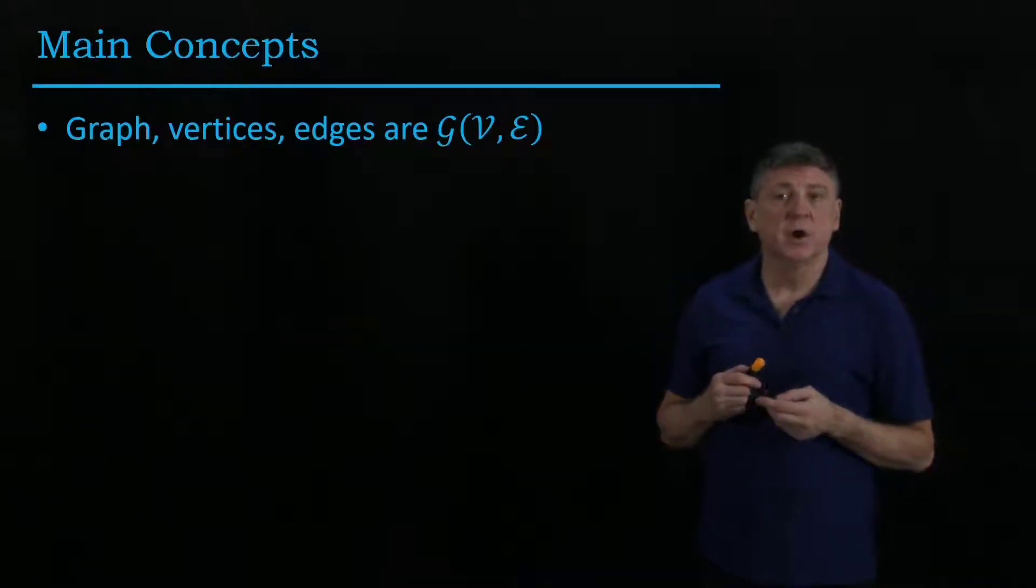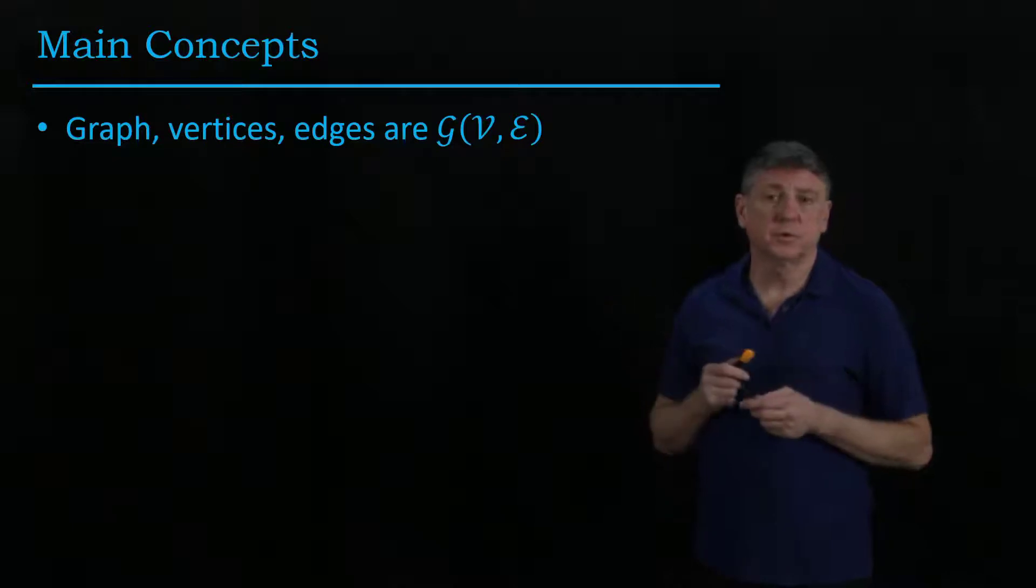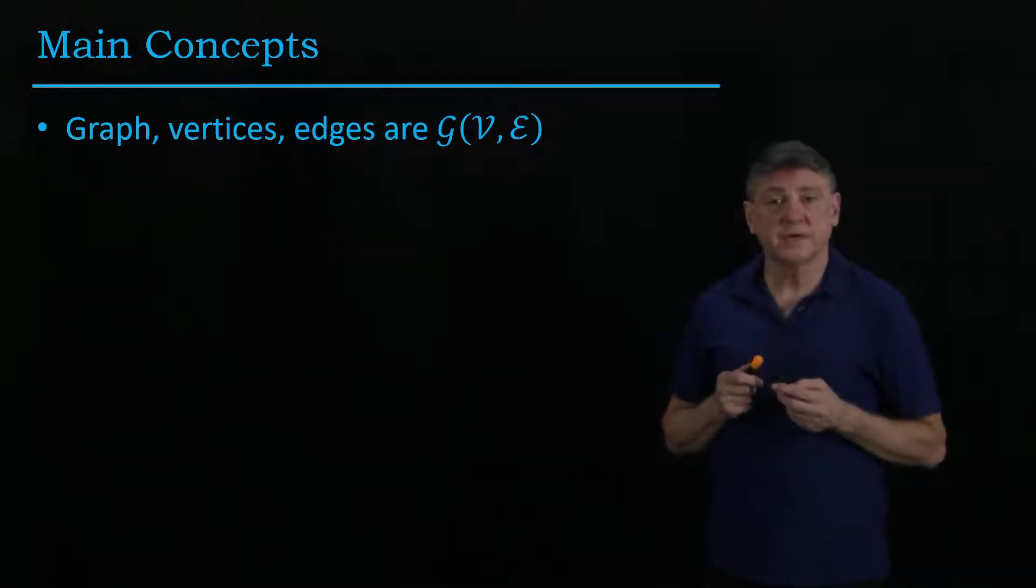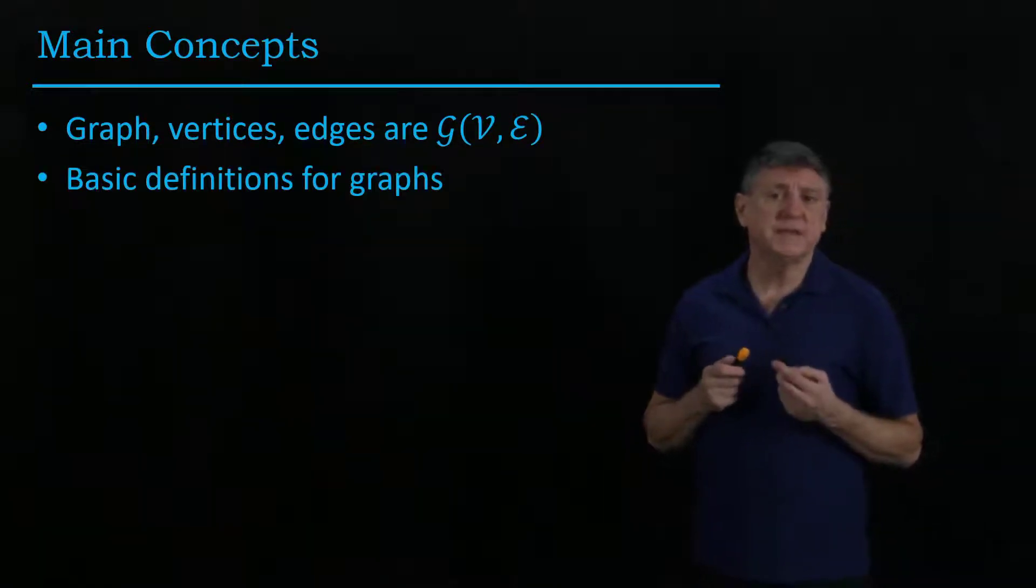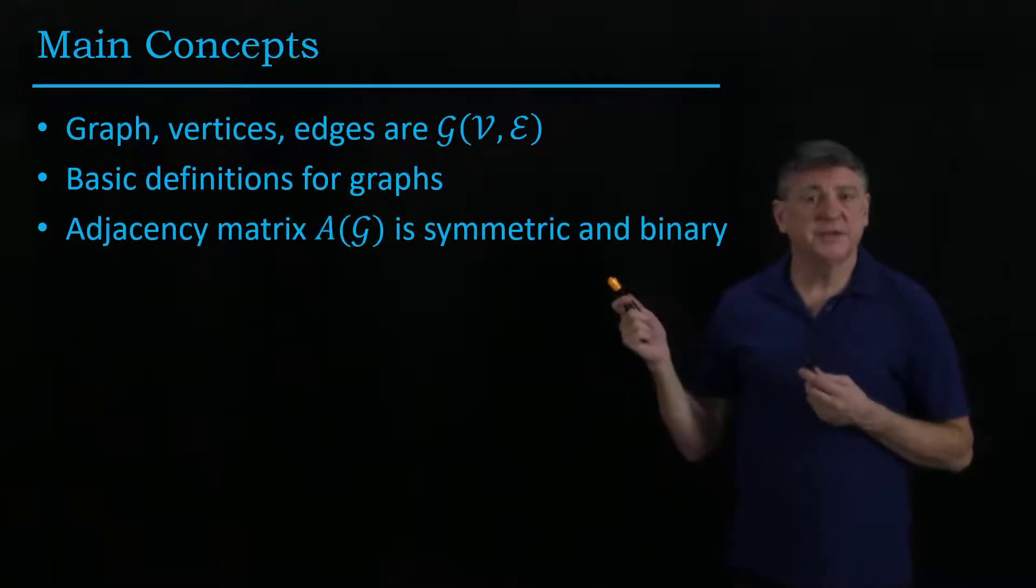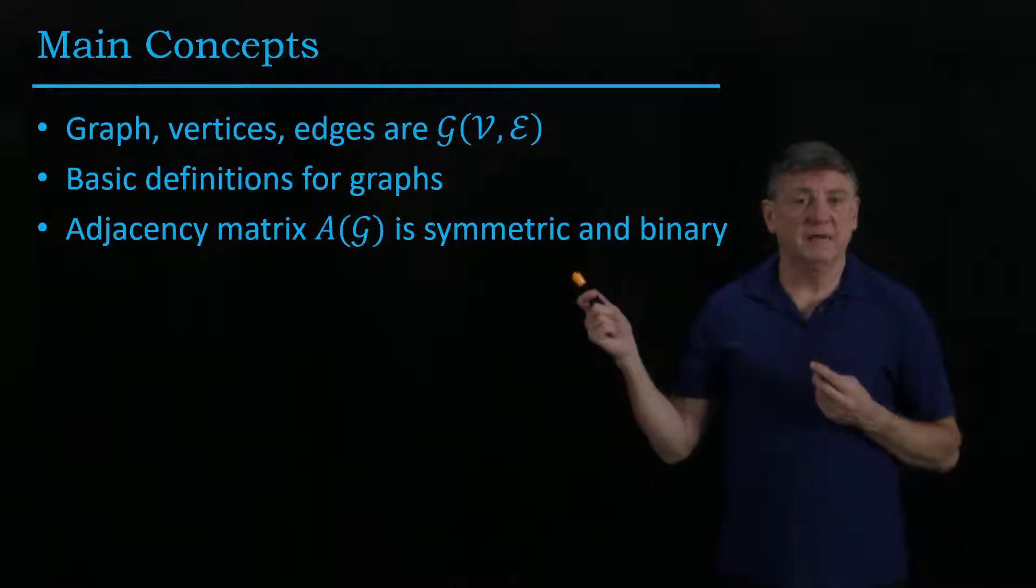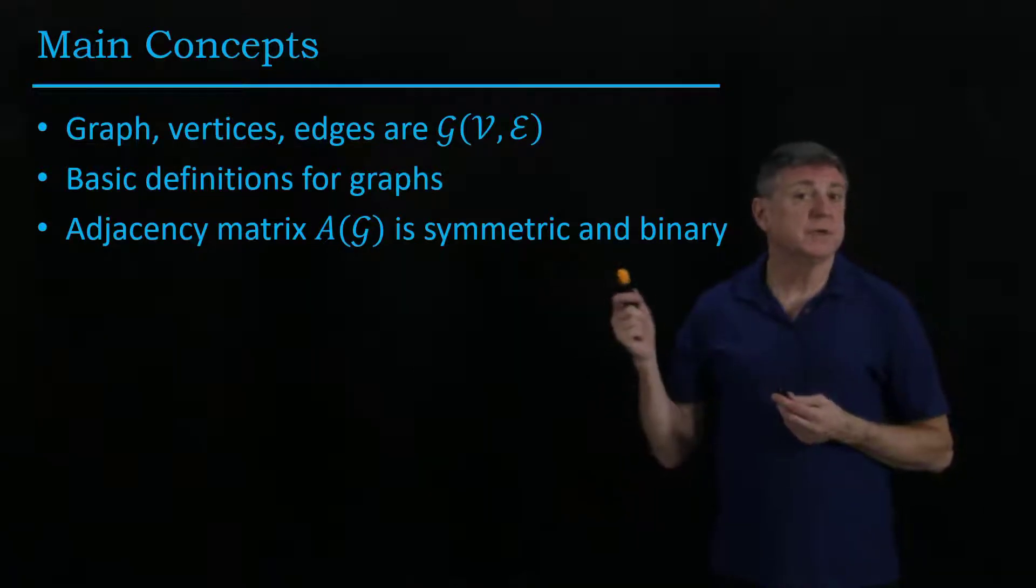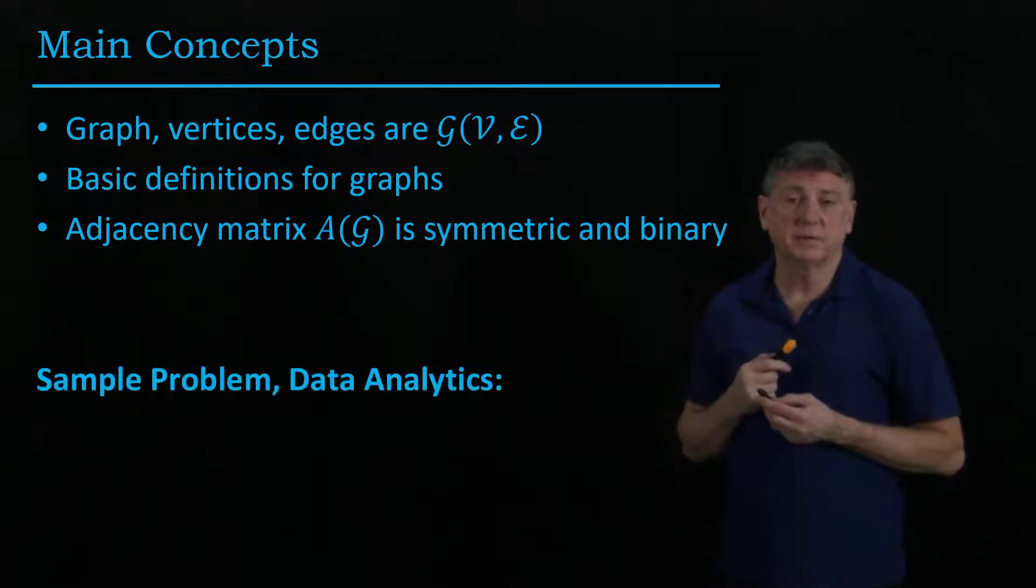The main concepts for this lecture are graphs, which you may know from other courses, composed of vertices and edges. We'll go through some of the basic definitions that we require for graphs. We'll represent an adjacency matrix for a graph, and we'll discover that it's a symmetric matrix that has binary entries.